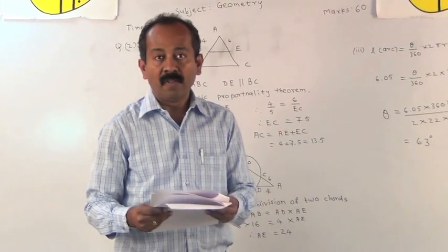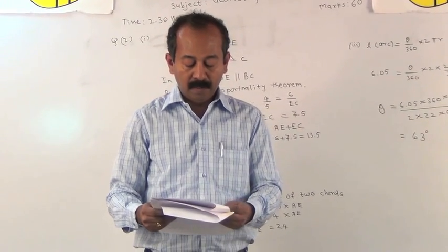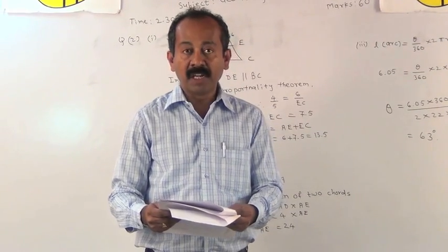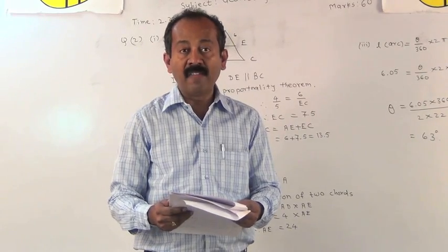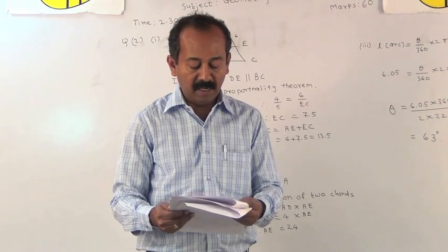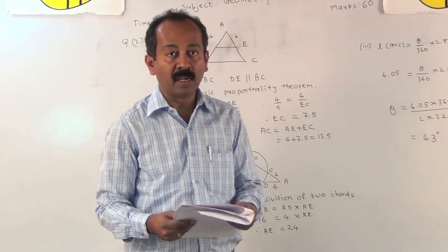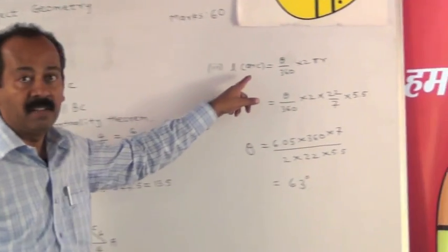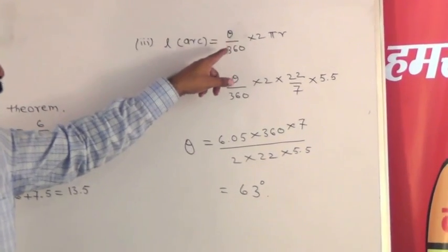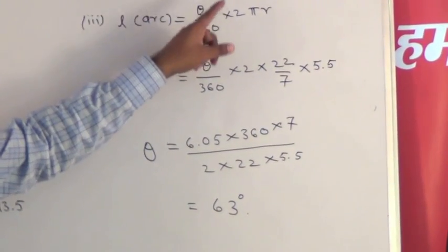Let us go for next example. Find the angle suspended by an arc of length 6.5 meter if the radius of the circle is 5.5 meter.